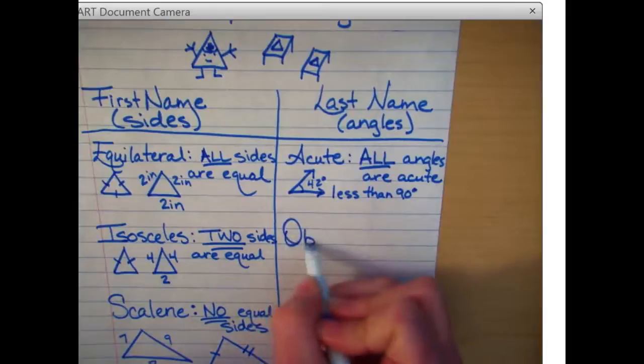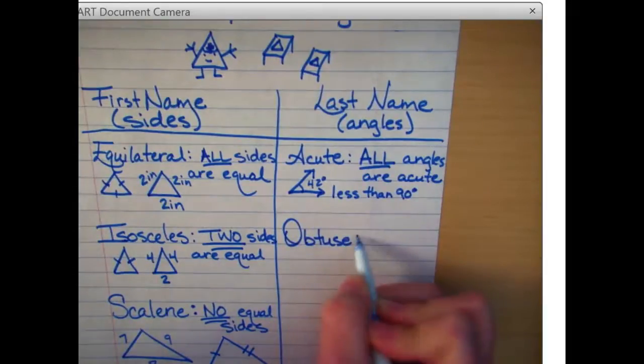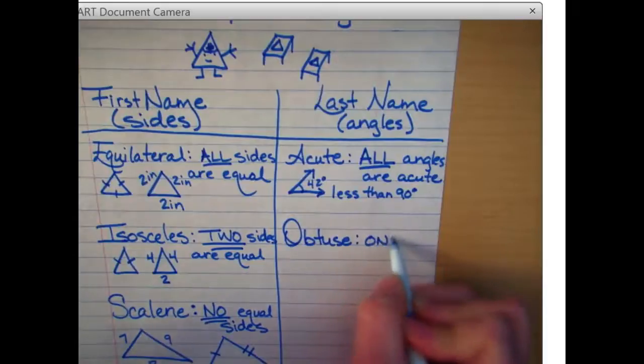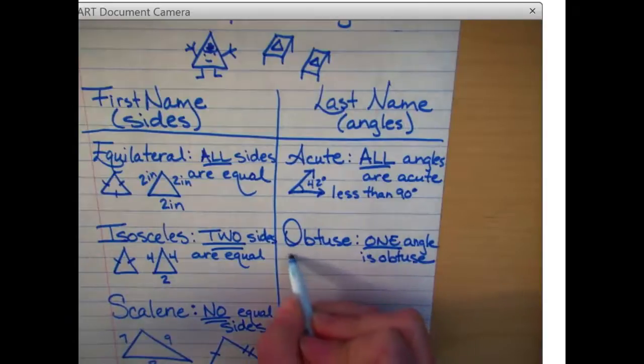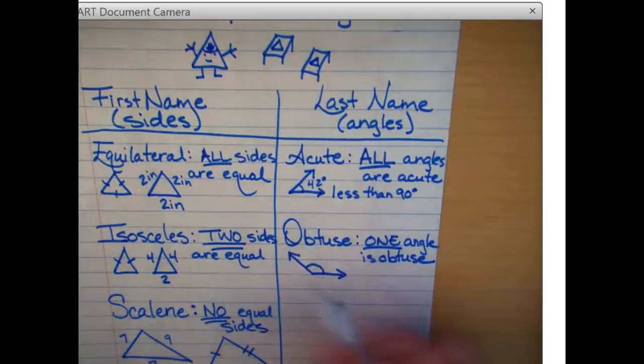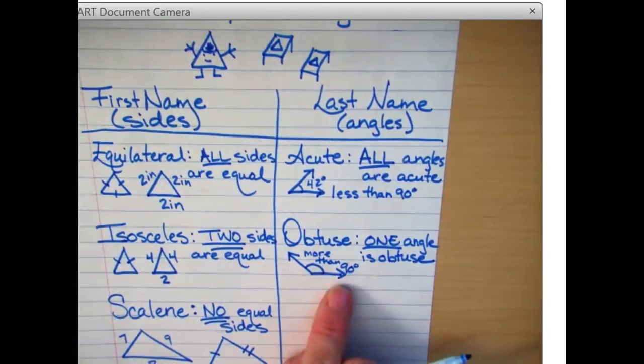His last name is obtuse if one, only one, angle is obtuse. These are the big, fat, chunky monkey angles. He's got a big old belly on him, right? These guys are more than 90 degrees. When you have an angle more than 90 degrees in a triangle, his last name is obtuse.